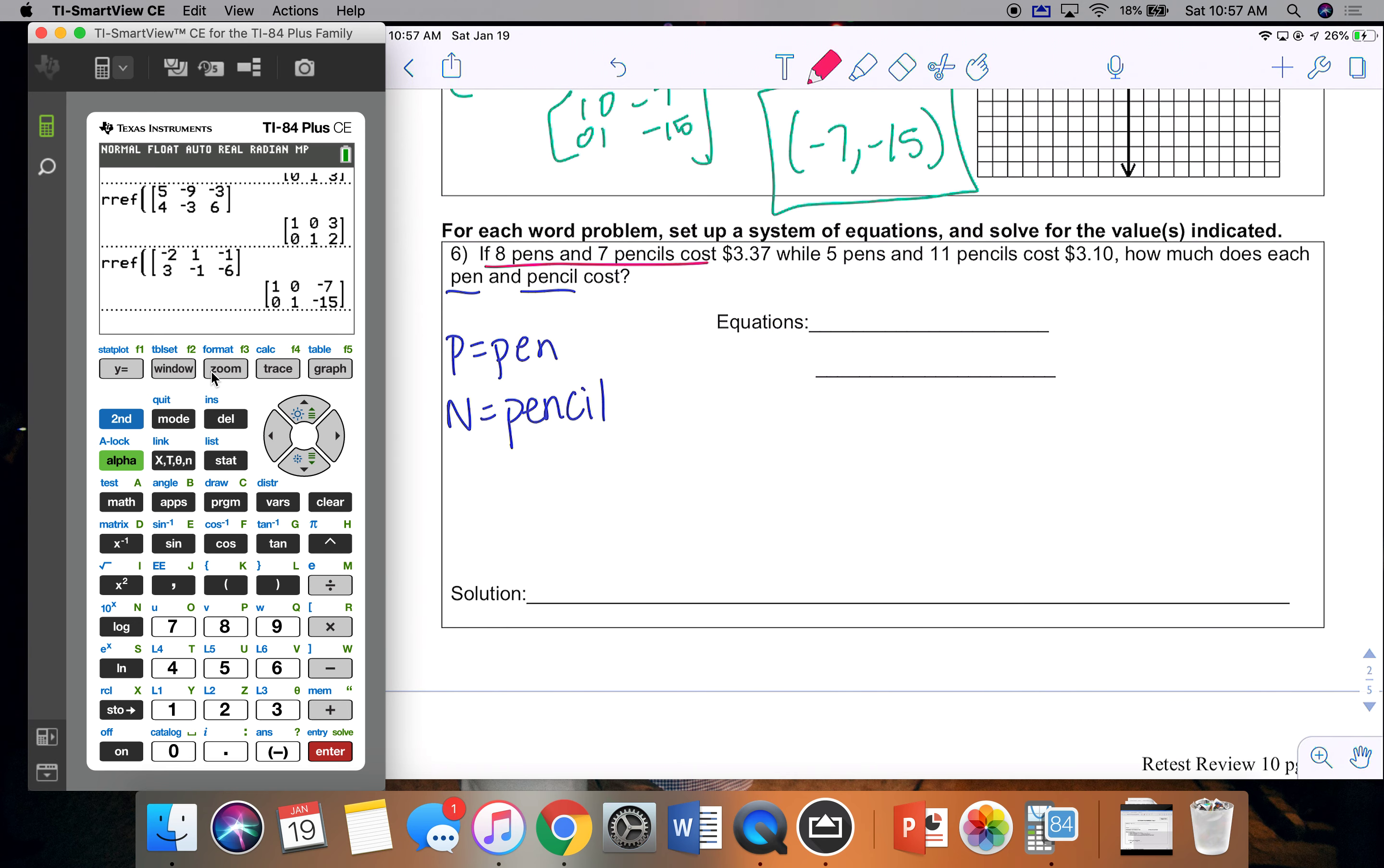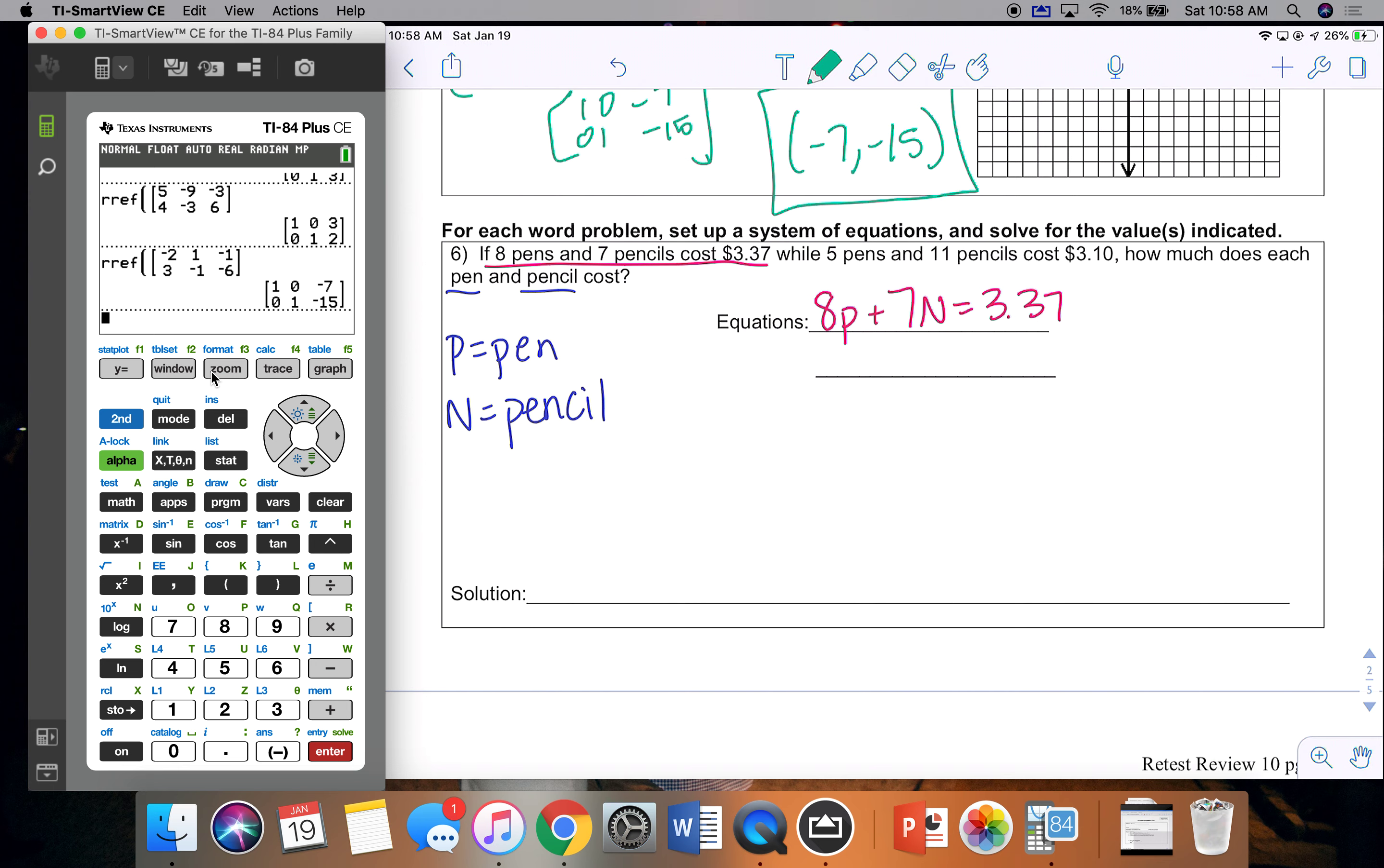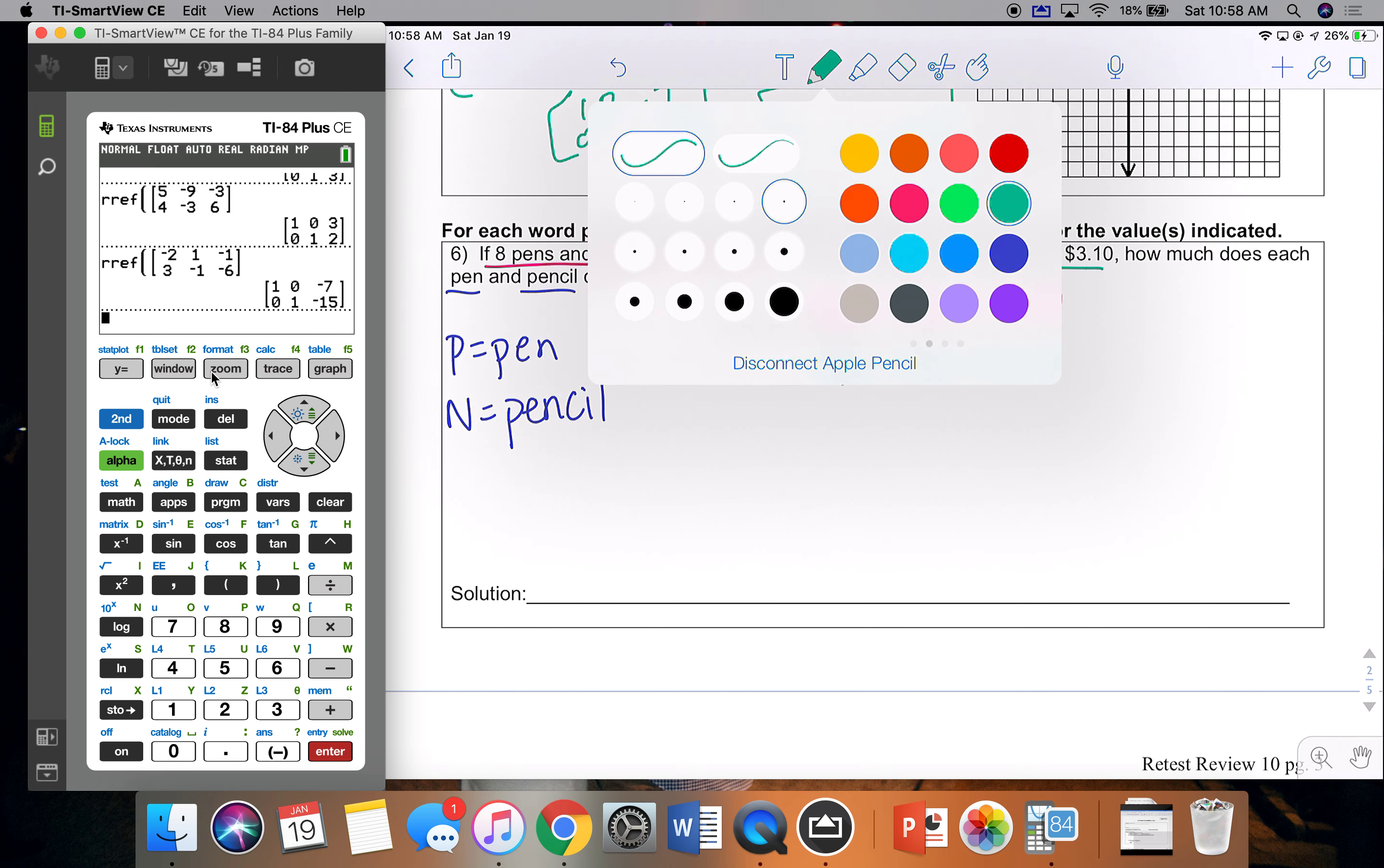So first info I have is going to be my first equation. 8 pens and 7 pencils cost a total of 337. So I'm taking my information and putting it into one equation. And then I'm going to do the same thing for the second equation. 5 pens, 11 pencils cost 310.